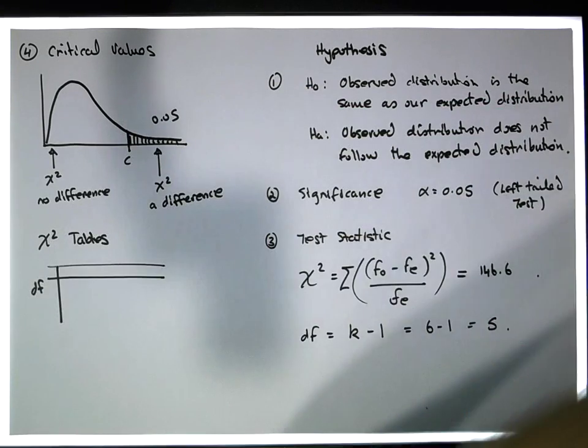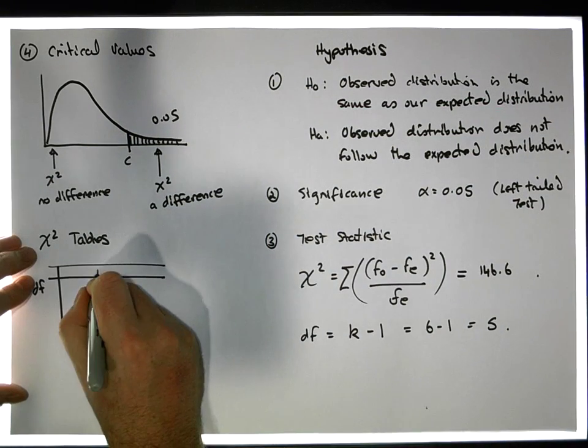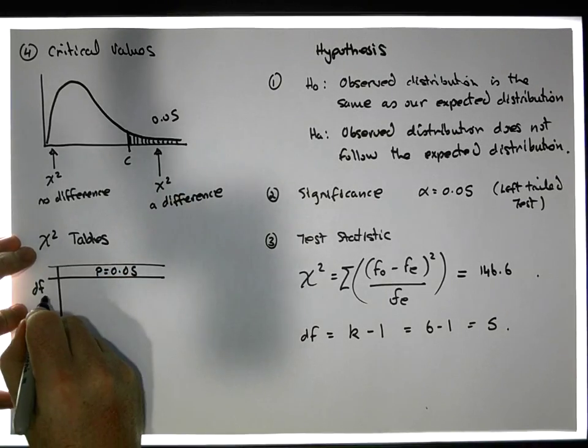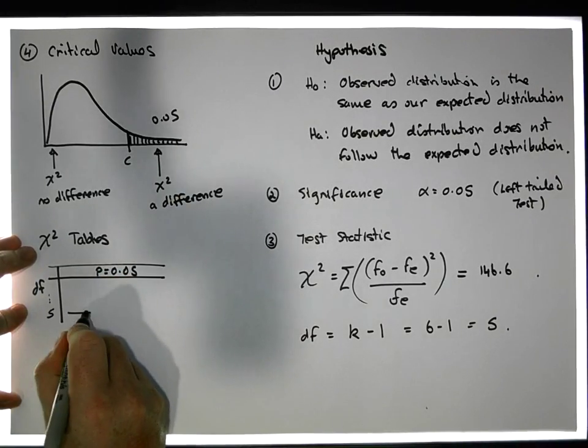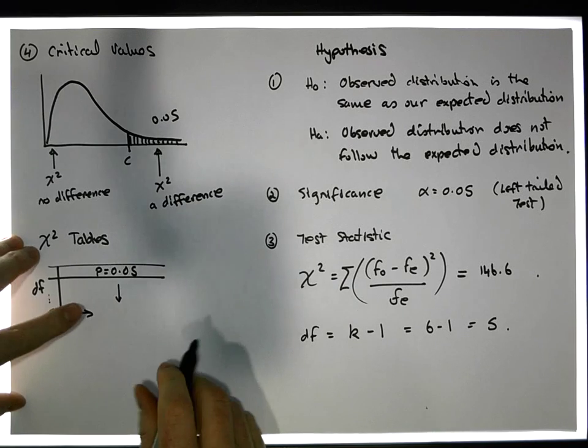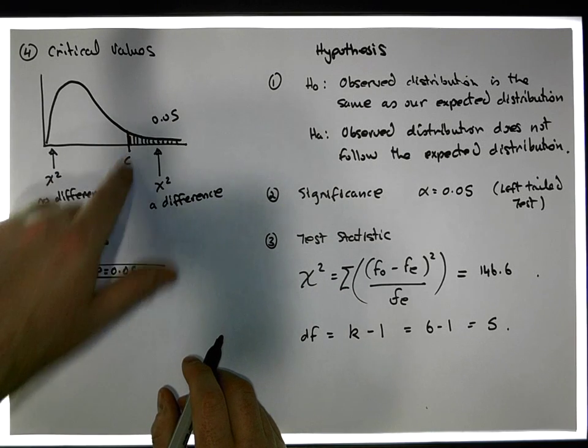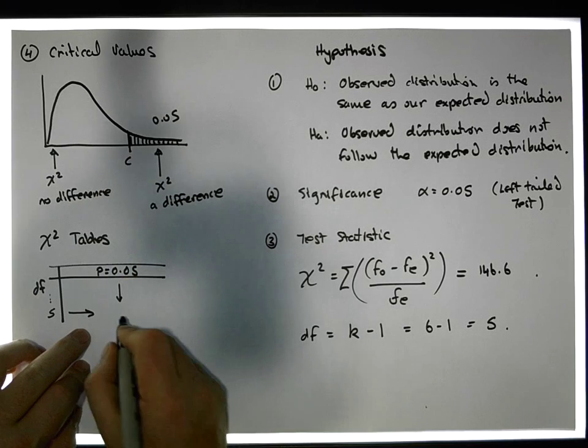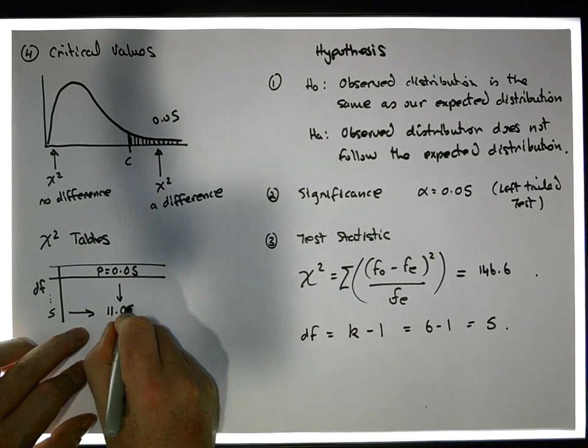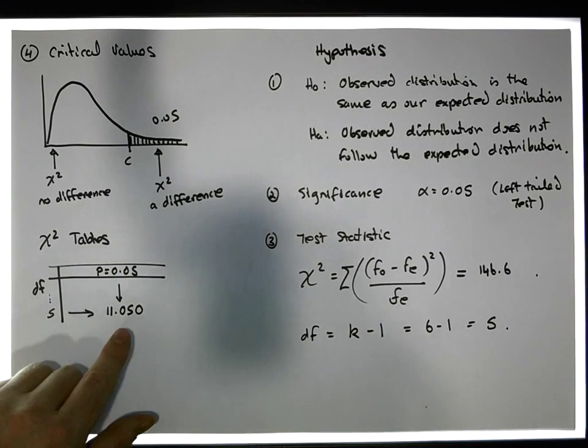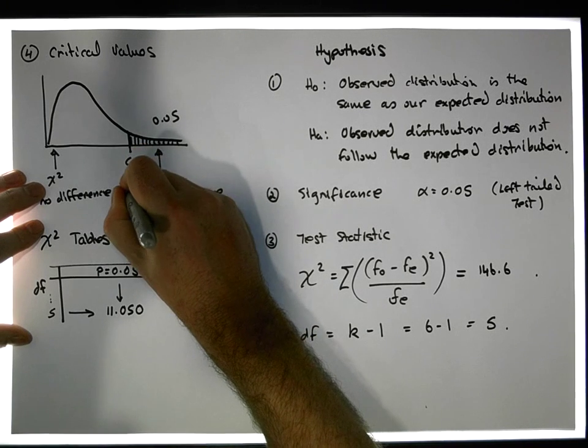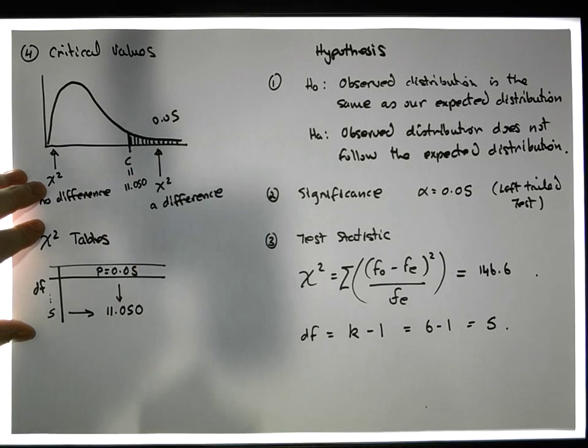So what I'm saying here is that with the probability of 0.05 in the right hand tail and with five degrees of freedom, this critical value is located at 11.050.